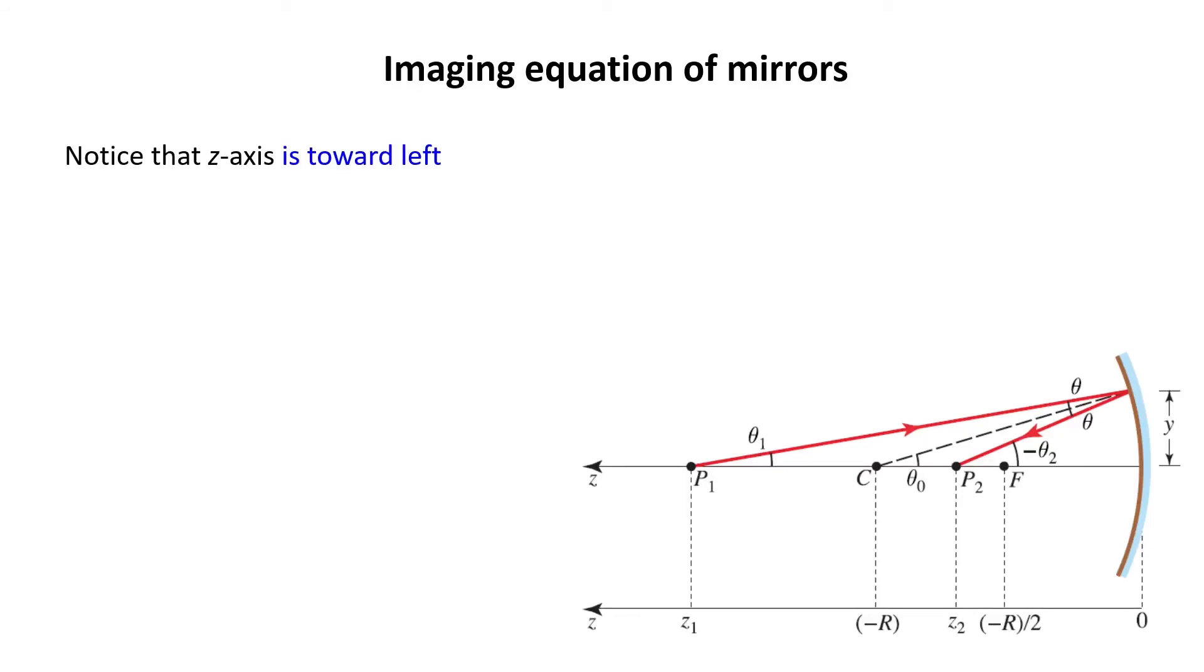You should notice that the z-axis is toward the left. As you see here, 0 is here and z1 and z2 are toward left.